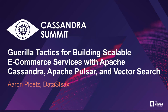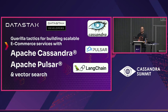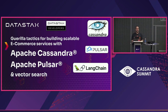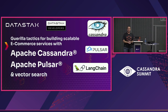Hello everyone, thank you for coming out. This is the guerrilla tactics for building scalable e-commerce services with Apache Cassandra, Apache Pulsar, and Vector Search. I have an image up there for LangChain at DataStax lately — I've been doing a lot of work with LangChain in terms of using it to abstract a lot of things around working with LLMs and generating embeddings. I'm going to talk a little bit about that today too.